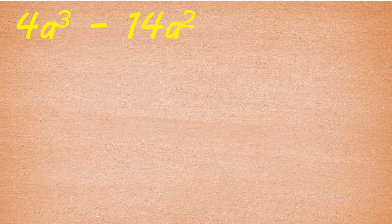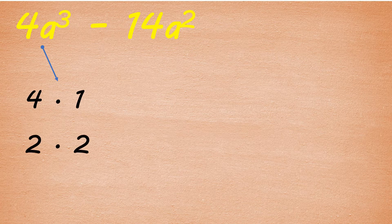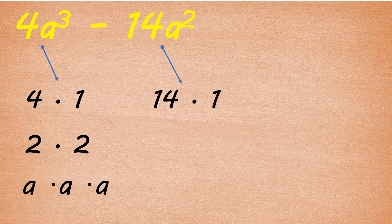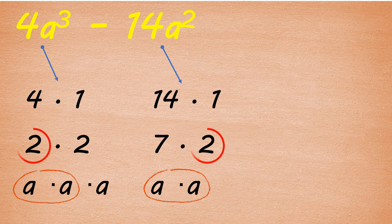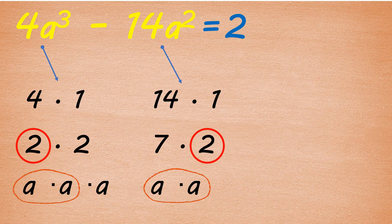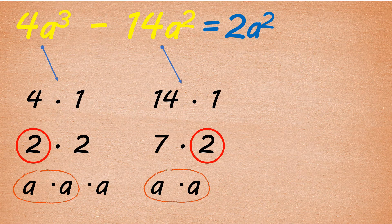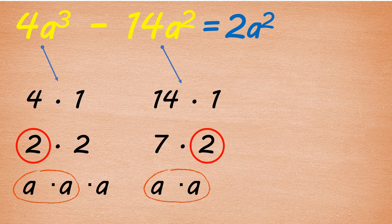Next, 4a cubed minus 14a squared. Factors of the first term 4a cubed are 4 and 1, and 2 and 2, and the a's. While for the second term 14a squared, the factors are 14 and 1, 7 and 2, and the a's. Their common factor is 2a squared. Since both of them have the variable a, it is also included in their common factor. You will just include the variable's lowest exponent in the common monomial factor, and that is 2.